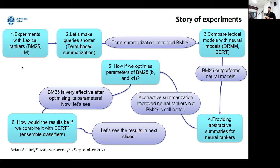Now we see that BM25 is working very well, so we thought: how about optimizing the parameters of BM25 — specifically B and K1? We saw that optimizing BM25 parameters is very effective; after optimizing, it improved in F-measure by about three percent. Then we thought about how results would be if we combine BM25 with BERT using an NSL classifier.